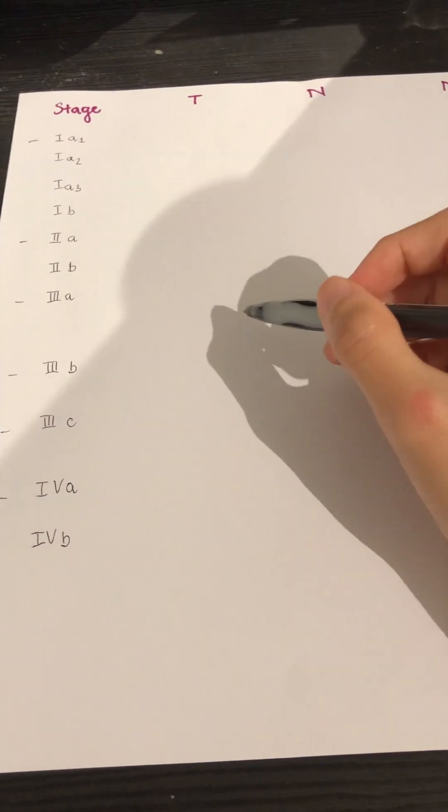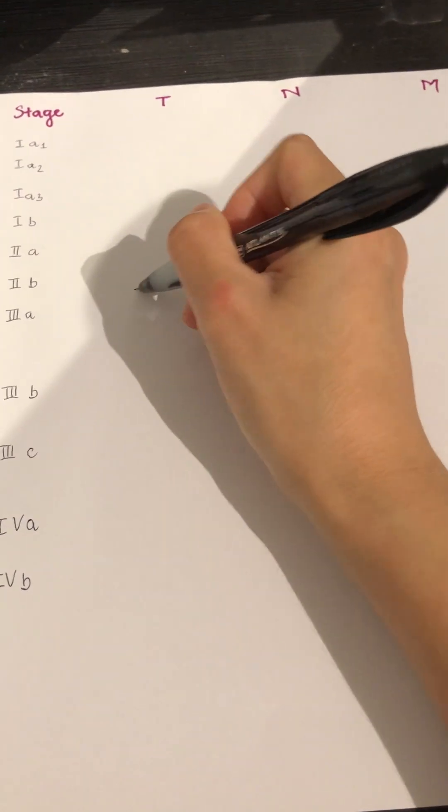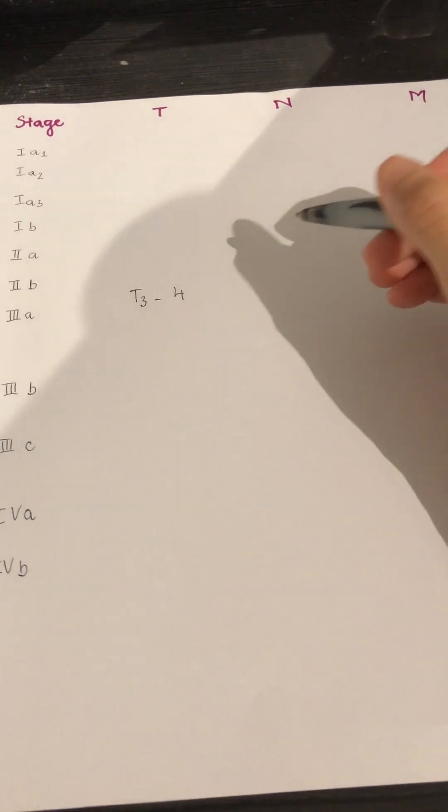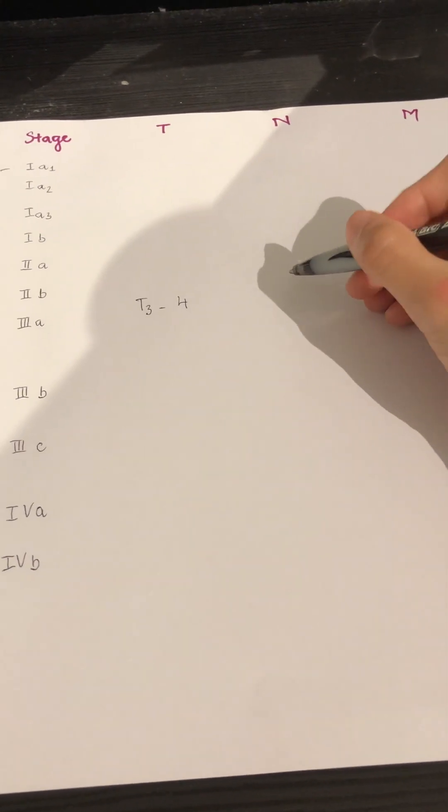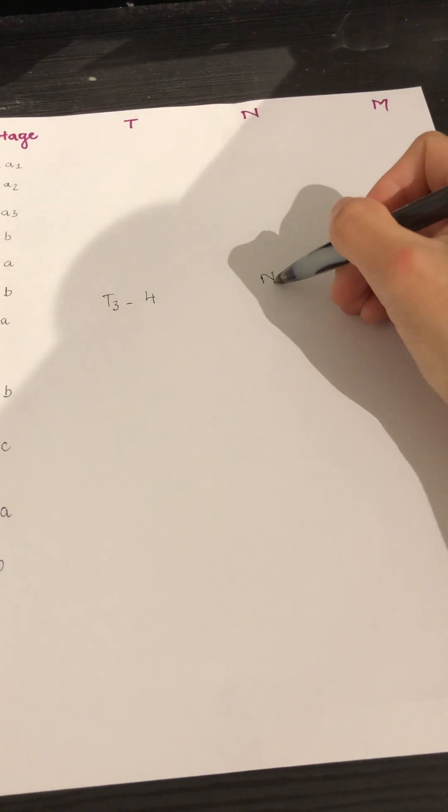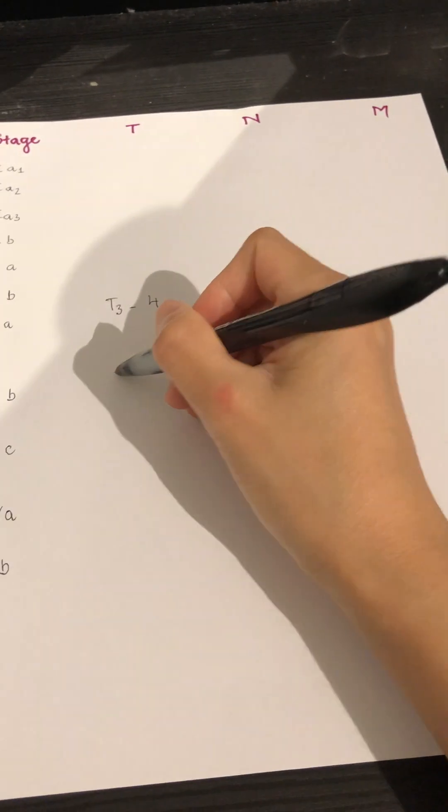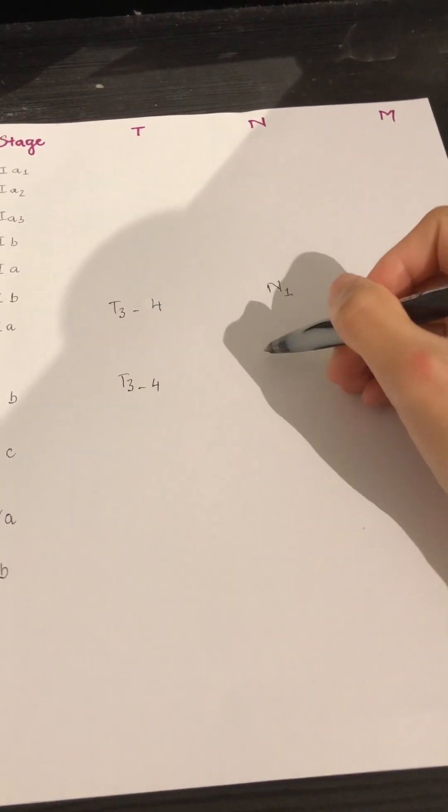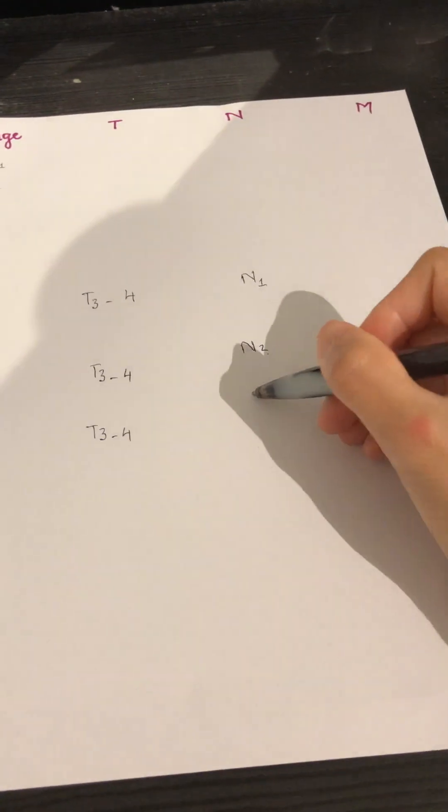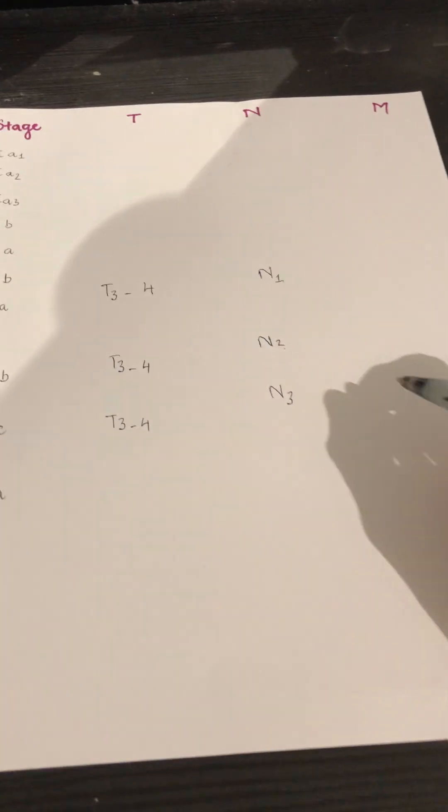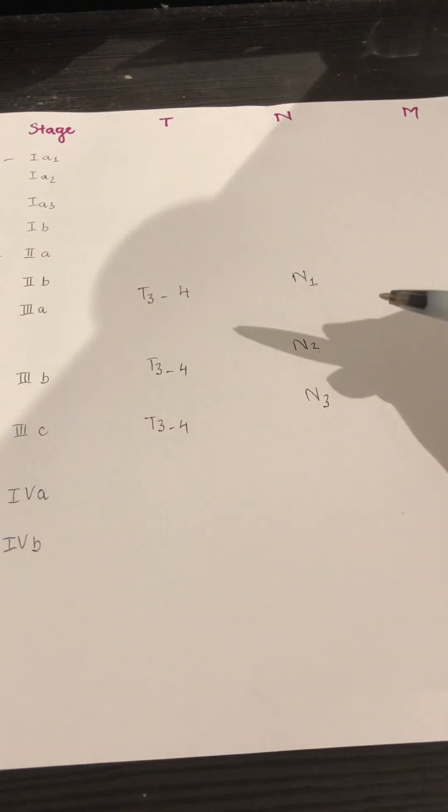So T3A. Remember, always started with T3 and T4 for stage 3. So T3 and T4 for 3A and N starting with N1 here. T3 and T4 for 3B and T3 and T4 for 3C. And then everything just flow from there.